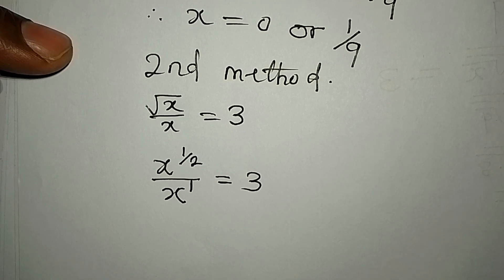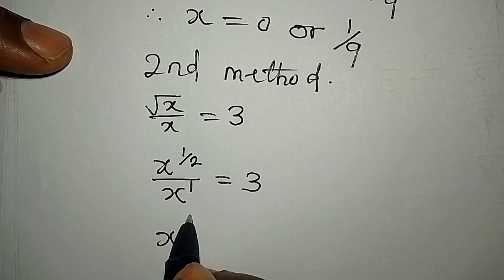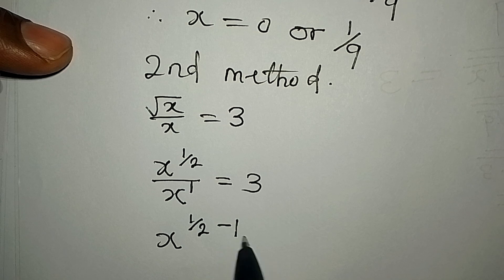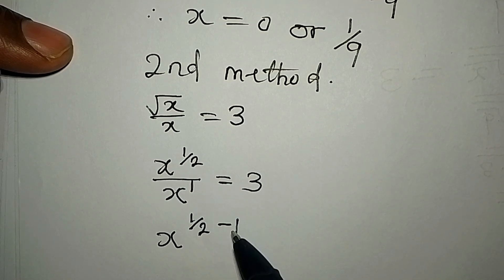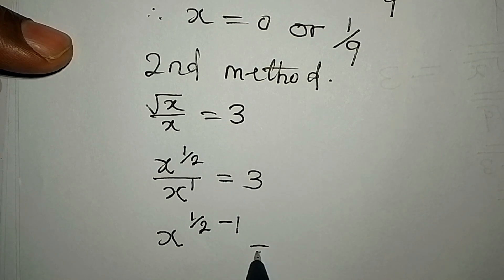Let's obey one of the laws of indices. If the bases are the same you will pick one, then if you have division you subtract the powers. So we're having one over two minus one. The power of the numerator is one over two, the power of the denominator is one, so we have to subtract both of them, and this is still equal to 3.